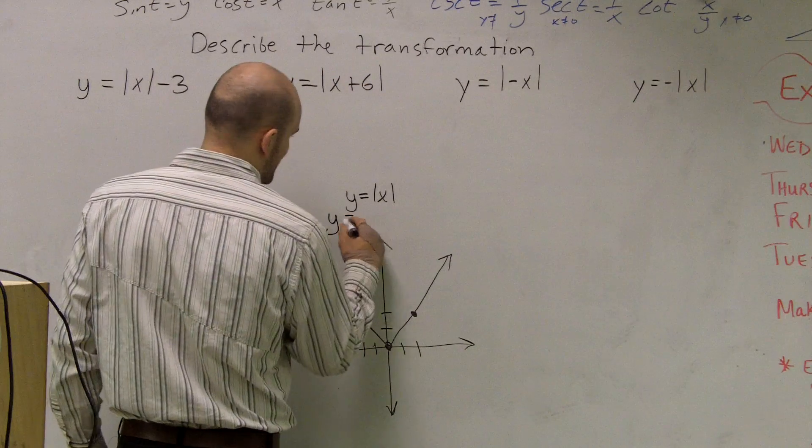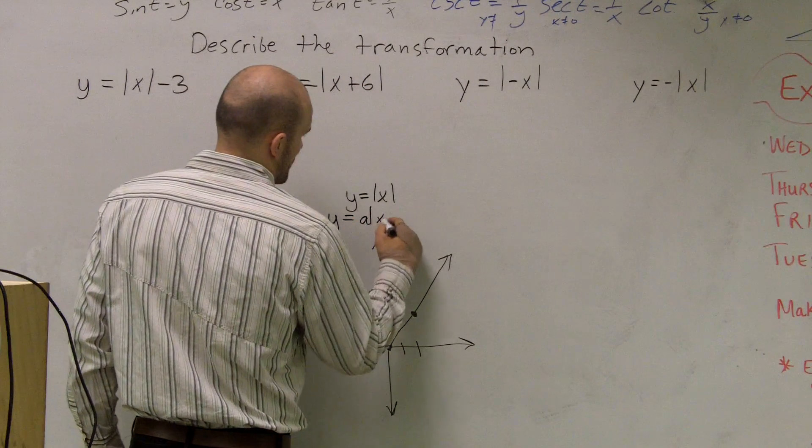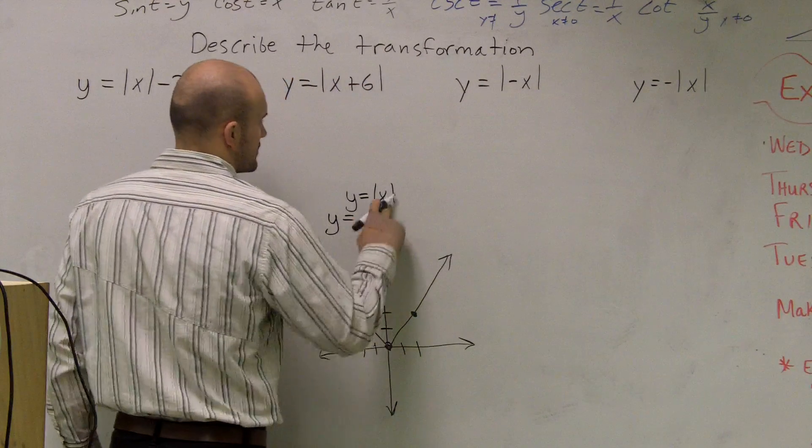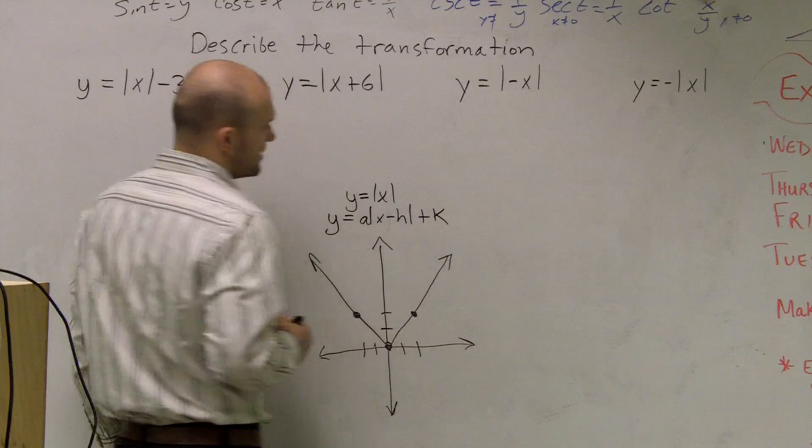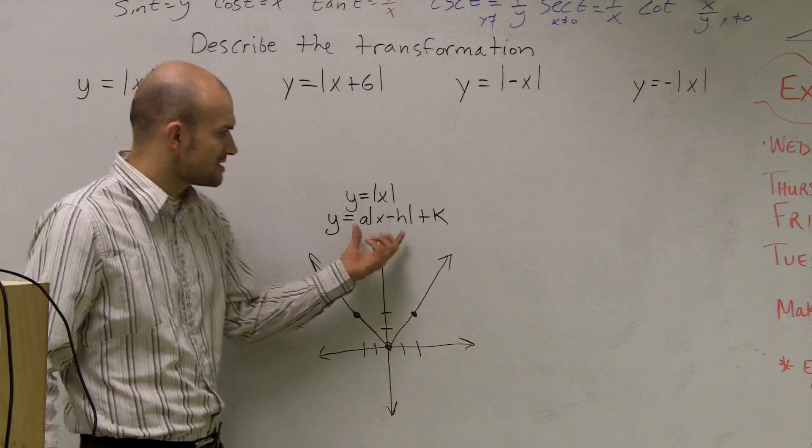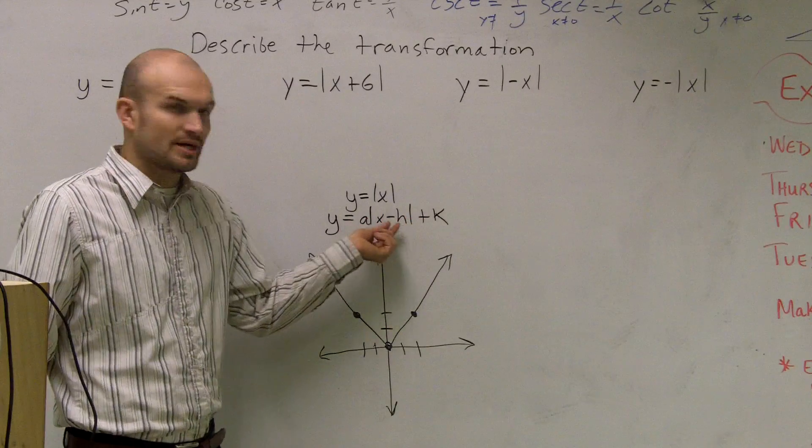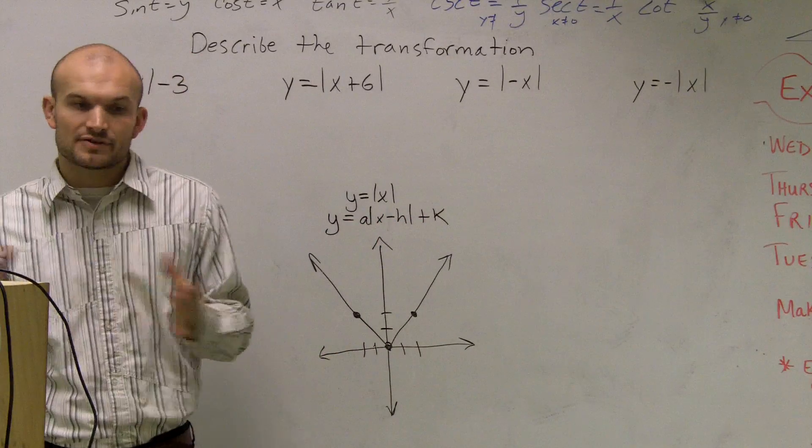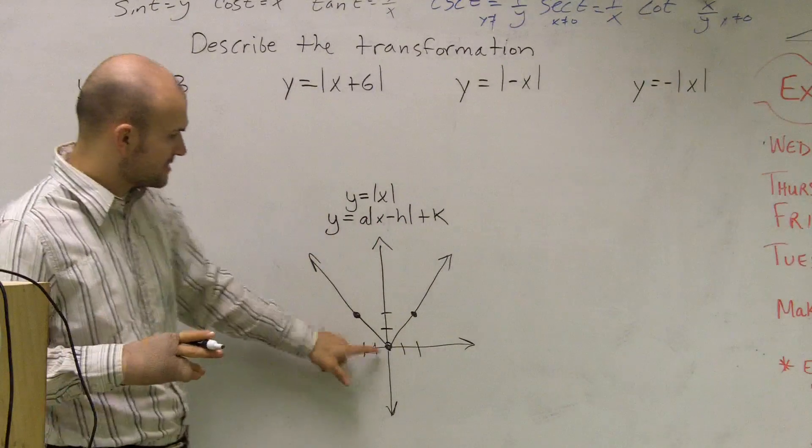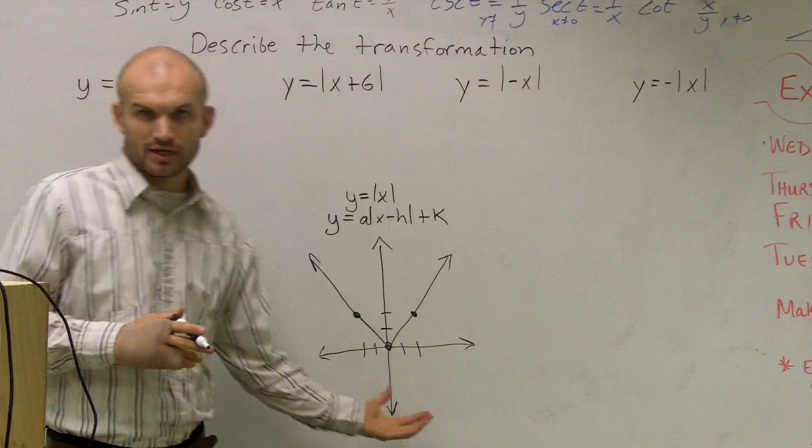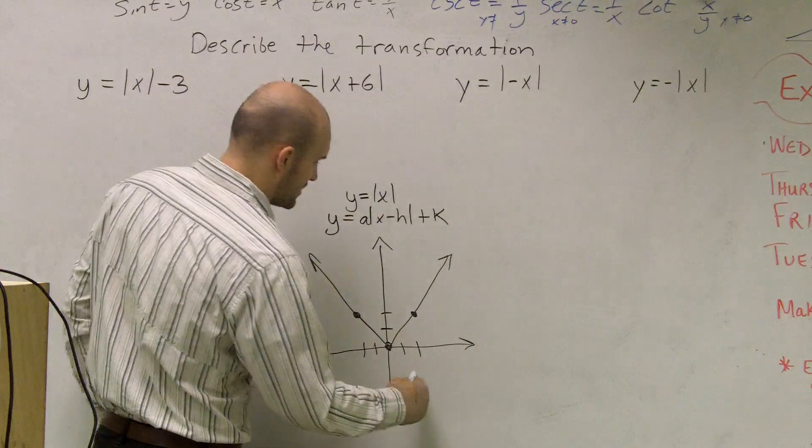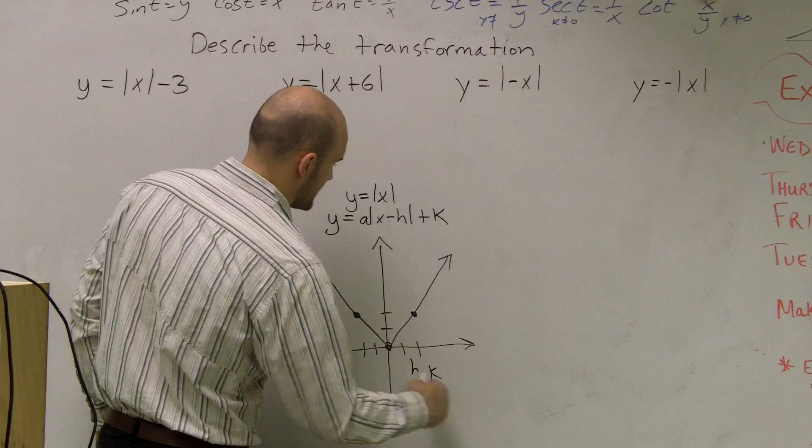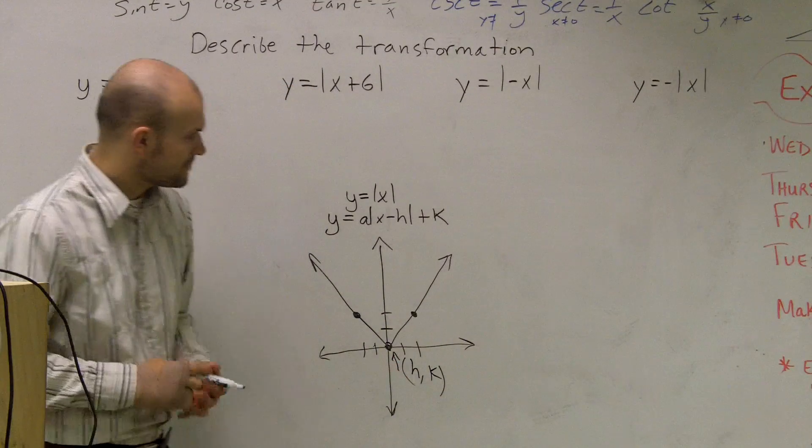And what I'm going to do is I'm going to write it in our transformation code. So what this tells us, these help us determine our h and our k where our graph is going to move. One important thing is this bottom point, which we like to call our vertex, the bottom of our graph. The vertex is labeled at the point of h comma k.